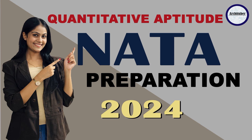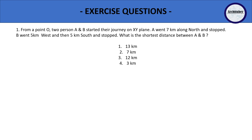Now let's begin with part two of quantitative aptitude. From point O, two persons A and B started their journey on the XY plane. A went seven kilometers along north and stopped. B went five kilometers west and then five kilometers south and stopped. What is the shortest distance between A and B?